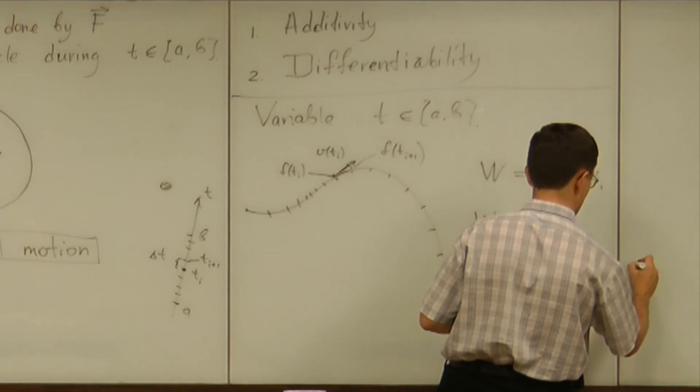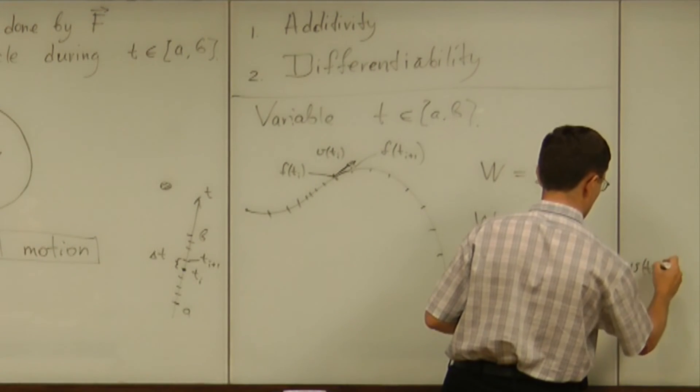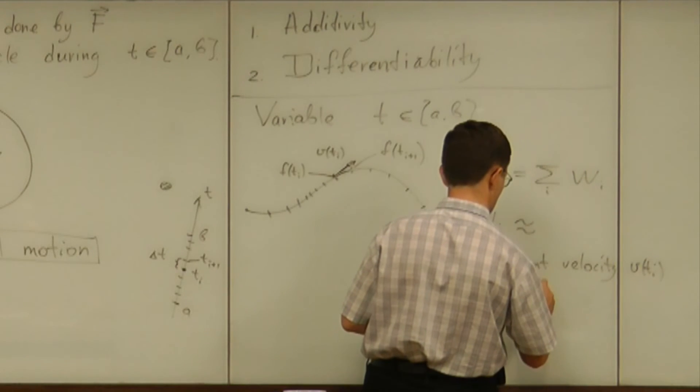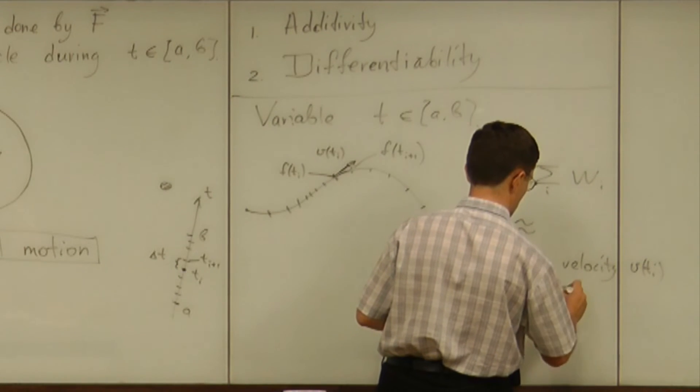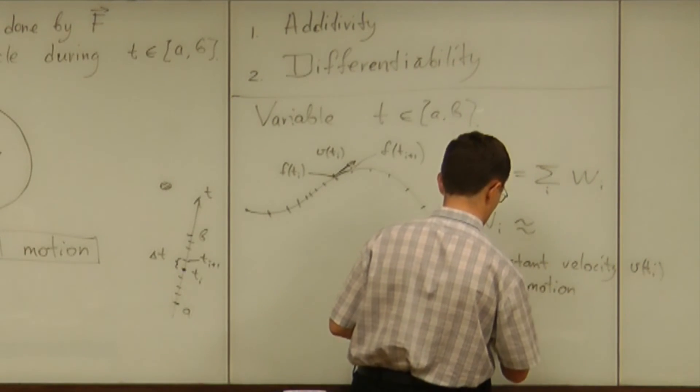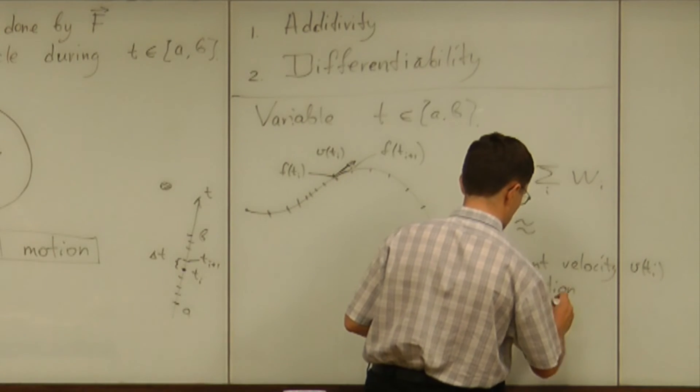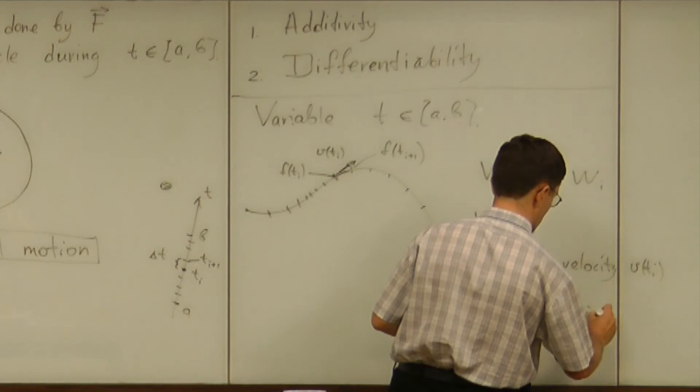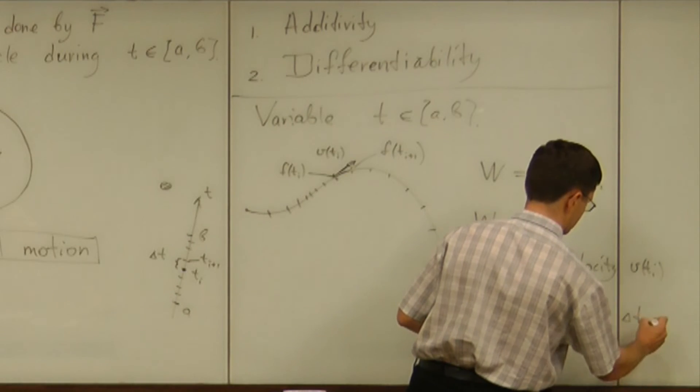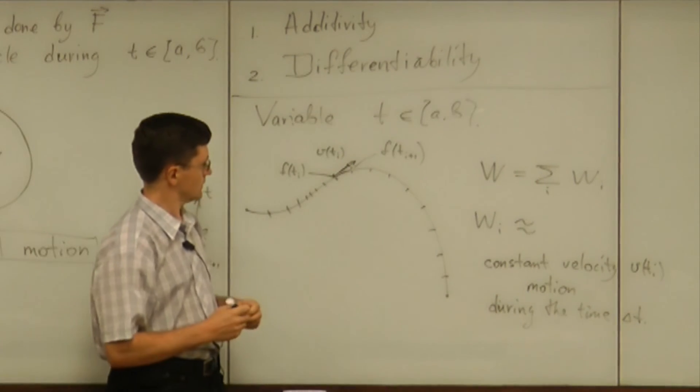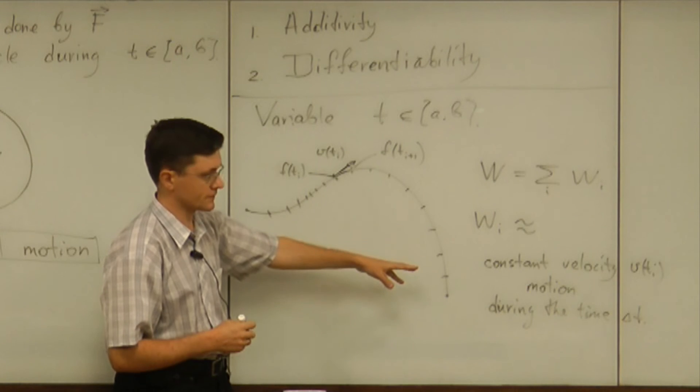So we have constant velocity motion. And that velocity is v of ti during the time delta t. Okay, so that is a part of the assumption. What else?